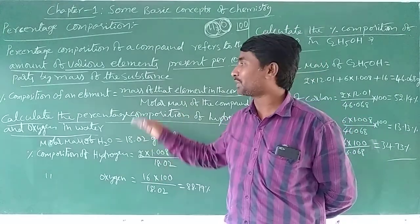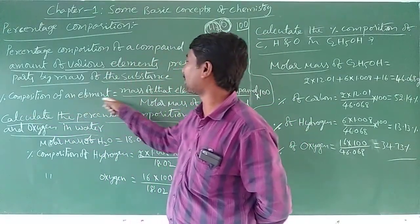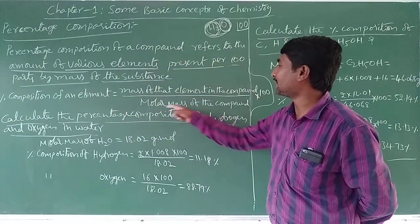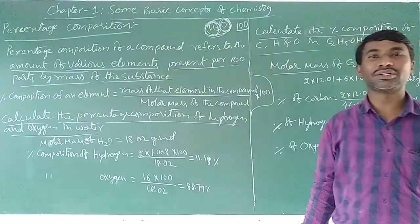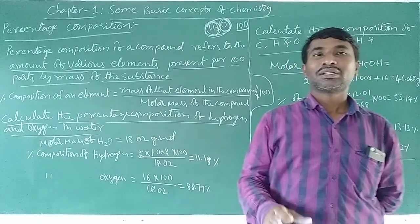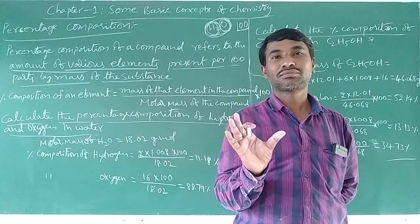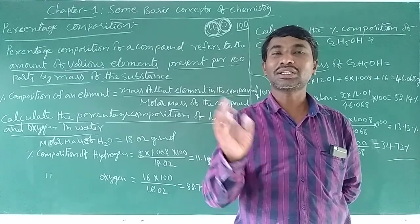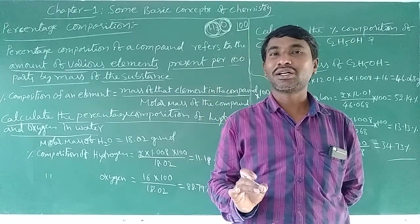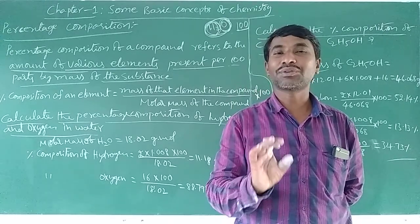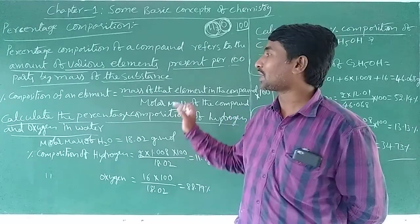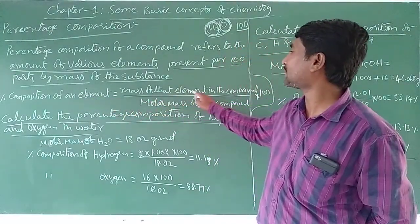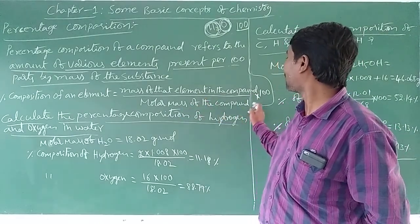How do we calculate? The formula is: percent composition of an element equals the mass of that element in the compound divided by the molar mass of the compound, multiplied by 100. That is the formula for percentage composition of an element.